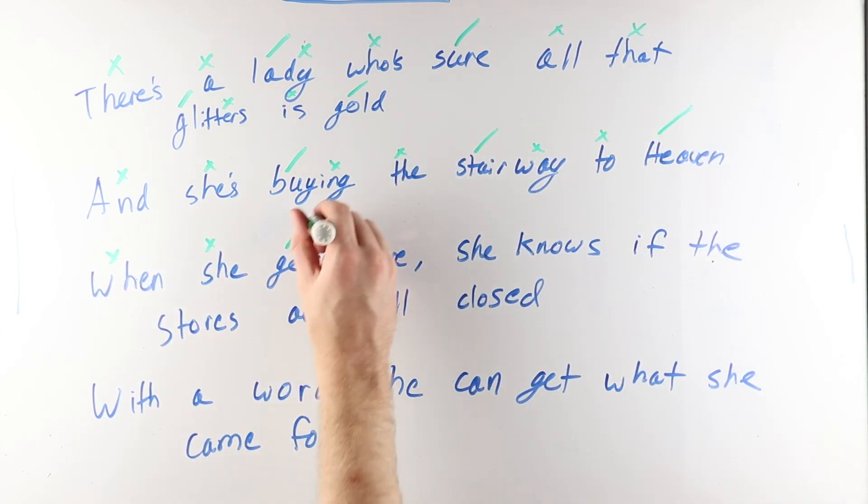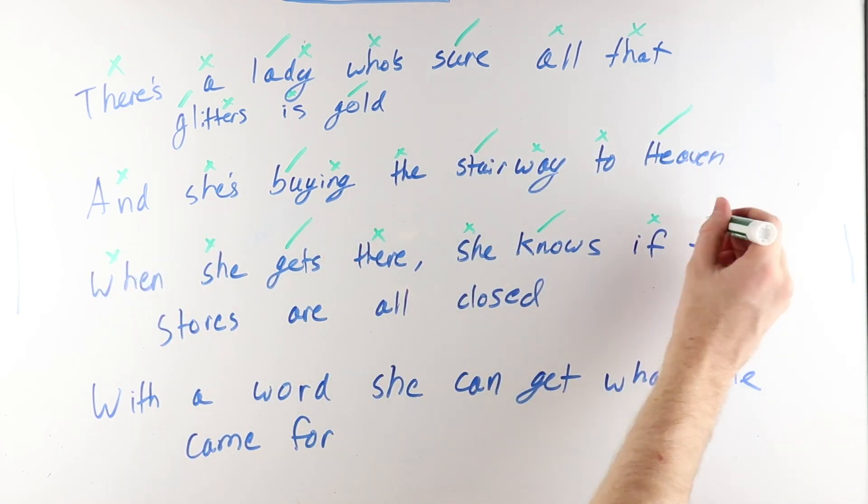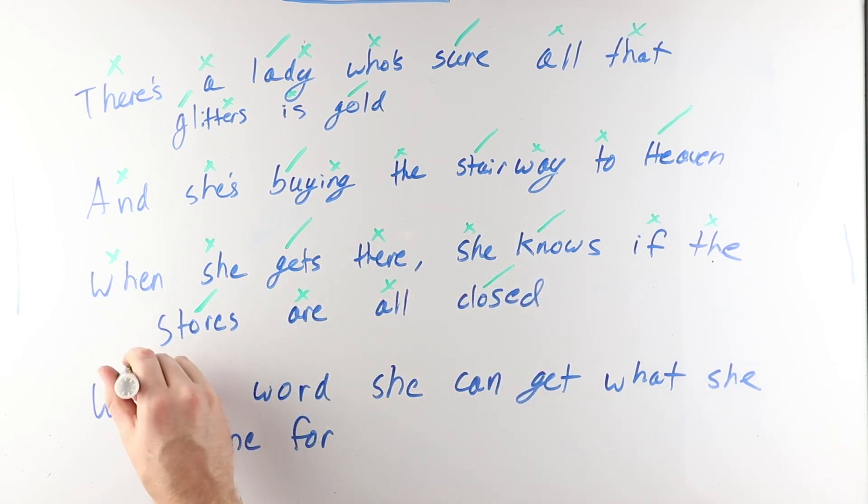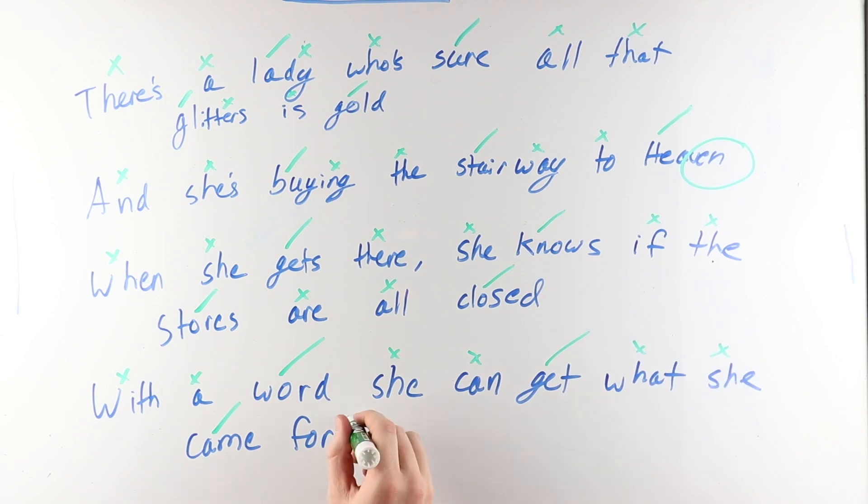The line, there's a lady who's sure all that glitters is gold, ends on rhythm because there is surety in the line. She knows all that glitters is gold. But in the next line, and she's buying a Stairway to Heaven, that last syllable lingers with no resolution.